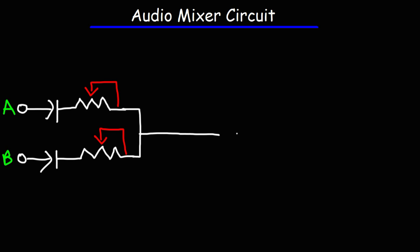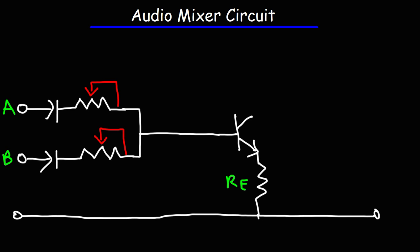This is going to go to the base of a transistor. Here we have an emitter resistor, which we'll call RE. And this line at the bottom, that's going to be the ground.